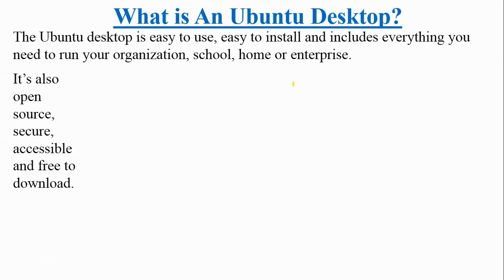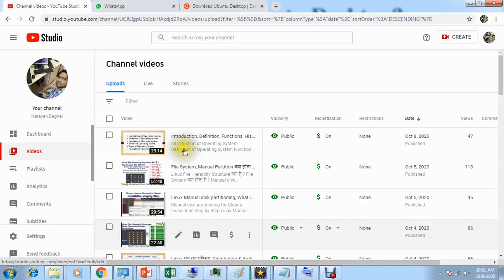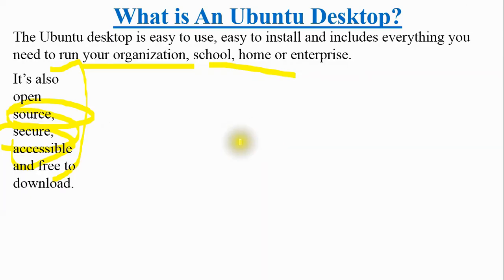Now we will talk about what is Ubuntu Desktop. The Ubuntu Desktop is easy to use and easy to install, and includes everything you need to run your organization, whether school, home, or enterprise. It is open source, secure, accessible, and free to download — you can go to ubuntu.com and download it. The 20.04.1 LTS version is available and you do not need to pay for it.